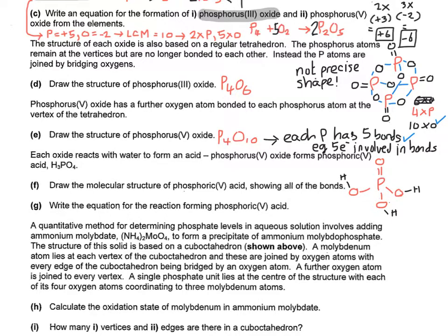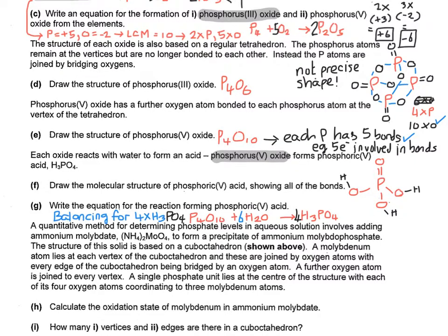So then it says, write the equation for the reaction forming phosphoric acid. So our product is H3PO4. Going back to the question, it tells us phosphorus(V) oxide forms phosphoric(V) acid. So we know that we've got P4O10 reacted with H2O to make H3PO4. Now all we have to do is balance it. So we can start by balancing for P4 by doing 4 phosphoric acids. And we can balance for 12 hydrogens on the right-hand side by doing 6H2O. And now we can see that it's balanced for oxygen.